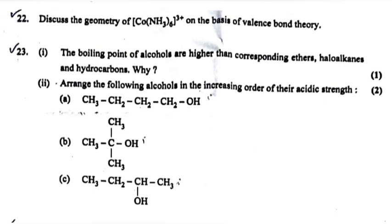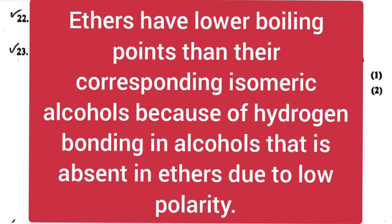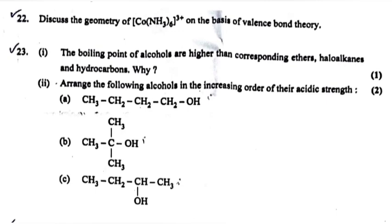Question 23, Part 1: The boiling points of alcohols are higher than corresponding ethers, haloalkanes, and hydrocarbons. Why? Answer: Ethers have lower boiling points than their corresponding isomeric alcohols because of hydrogen bonding in alcohol that is absent in ether due to low polarity. Part 2: Arrange the following alcohols in the increasing order of their acidic strength. Answer: A greater than C greater than B.